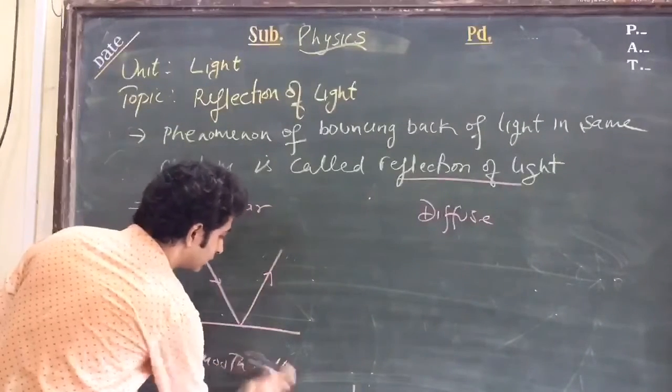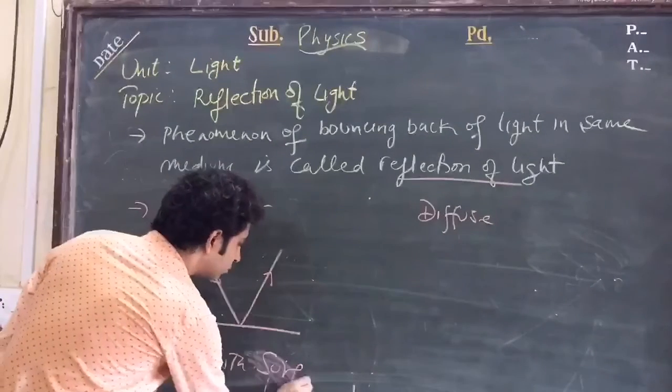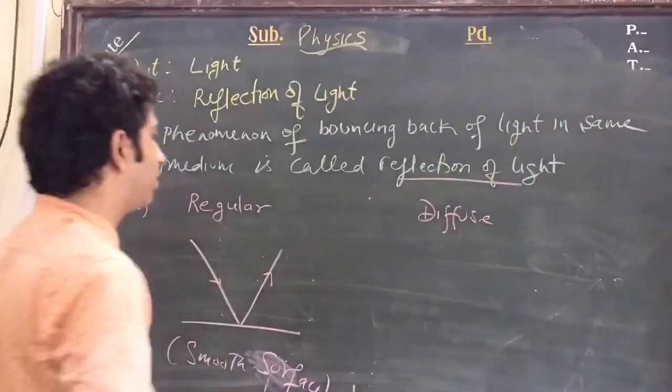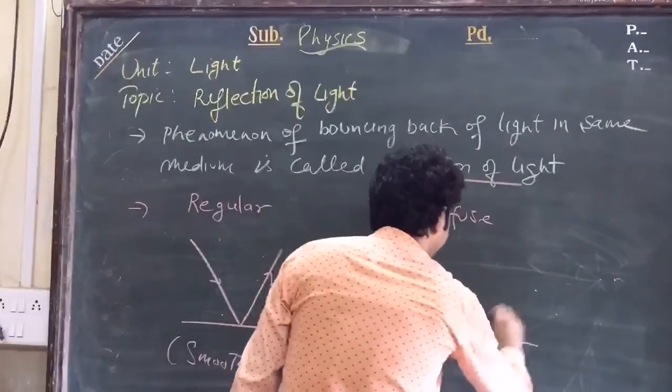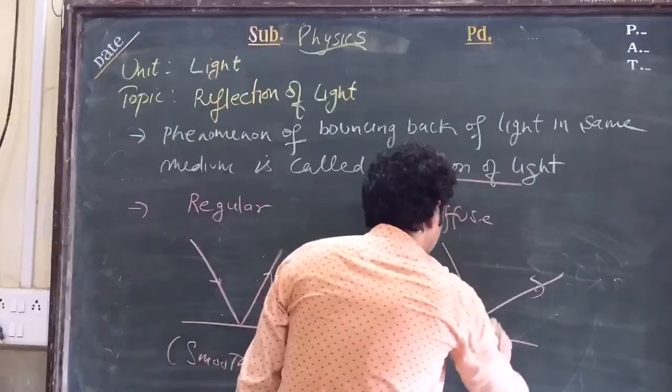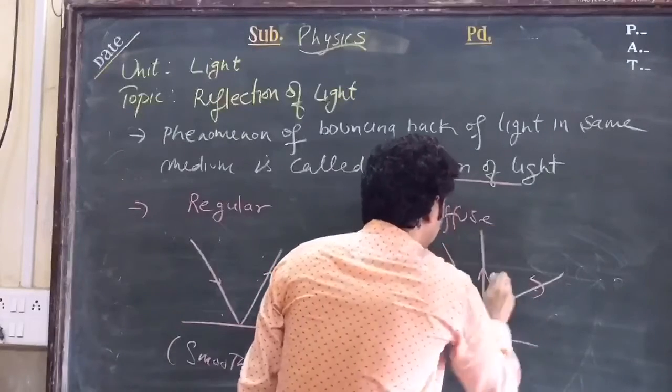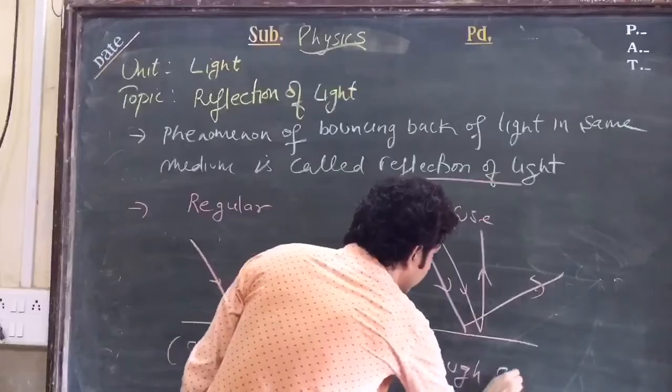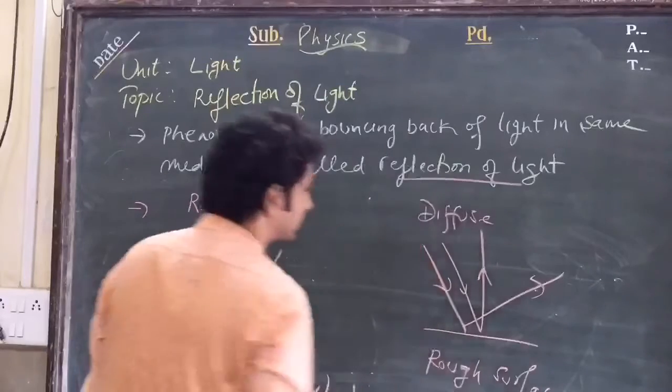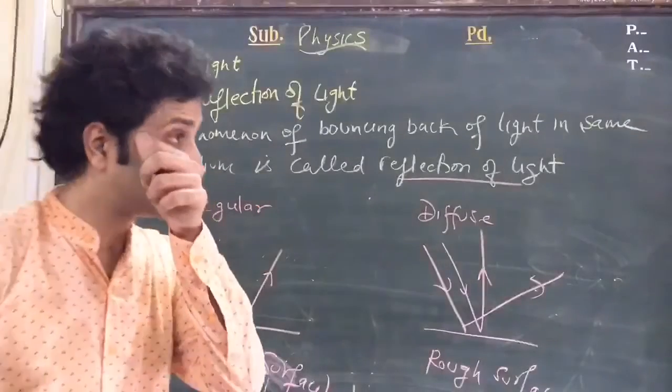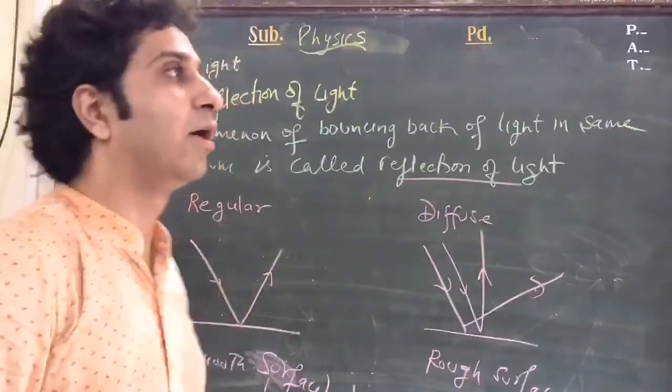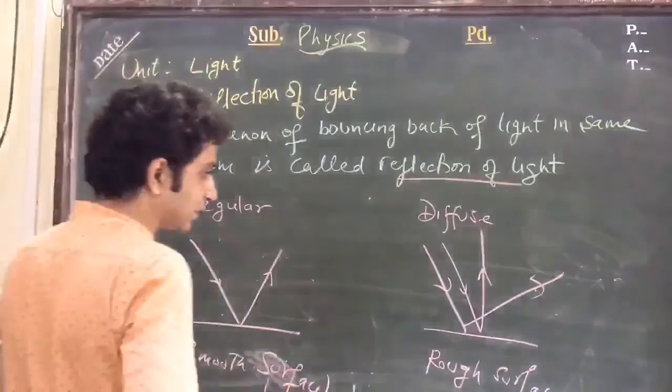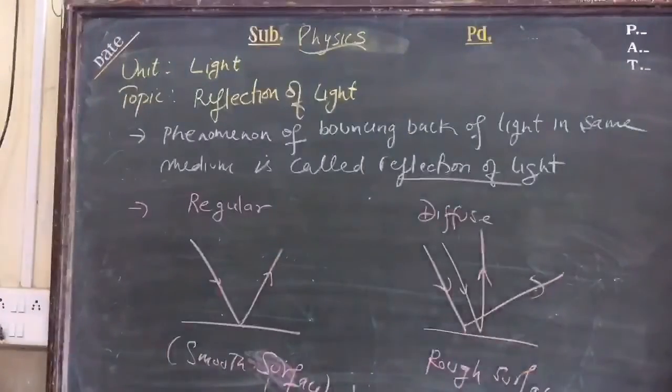Whereas if reflection happens on a rough surface, then the reflection is called diffuse reflection. I will give you one more aspect after defining the next concept, that is laws of reflection.